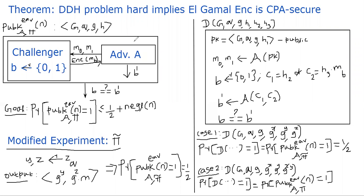Hello, welcome back. In this segment, I will prove the interesting theorem that if the Decisional Diffie-Hellman problem is assumed to be hard, then ElGamal encryption is CPA secure.